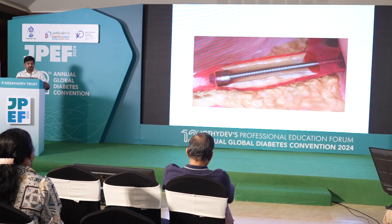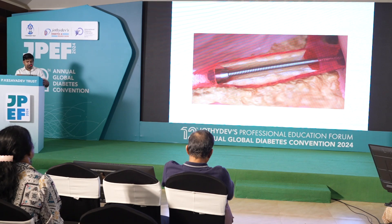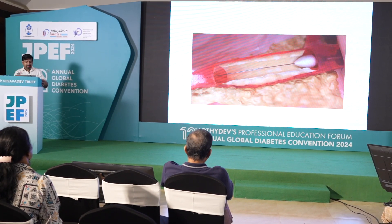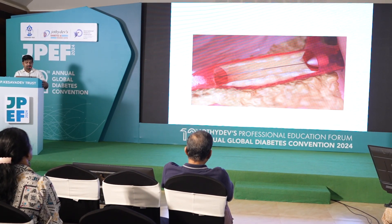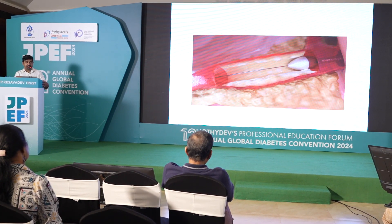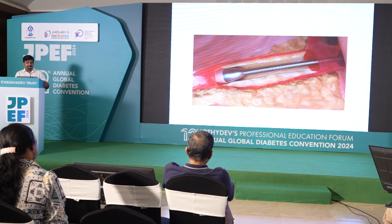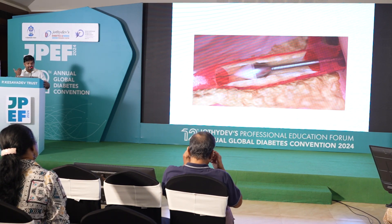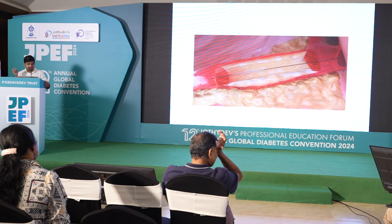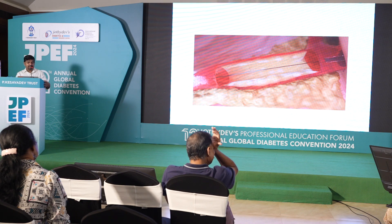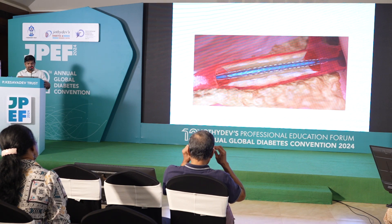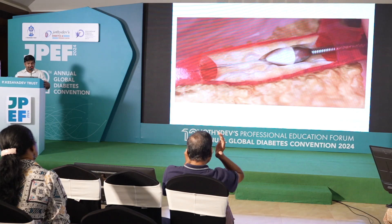What you see here is what is called rotational atherectomy. It is a micro drill which drills out calcium within the coronary arteries to open up these vessels. Calcified coronaries require major high-risk angioplasty or coronary artery bypass surgery for revascularization.